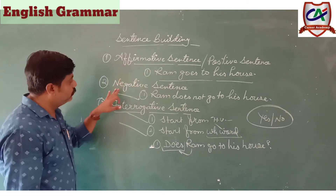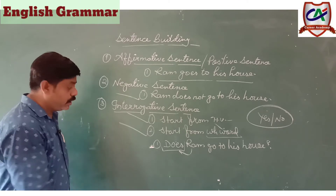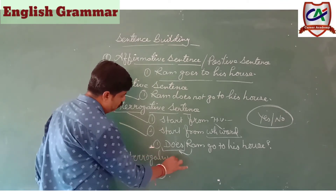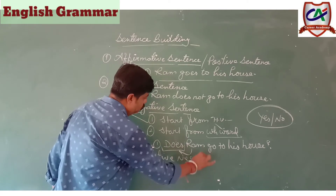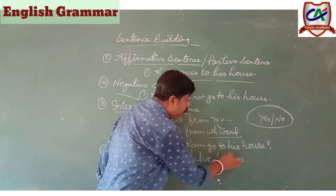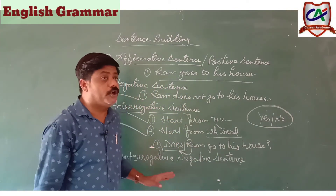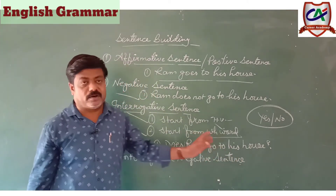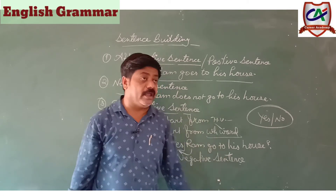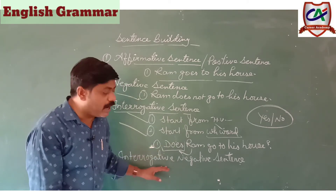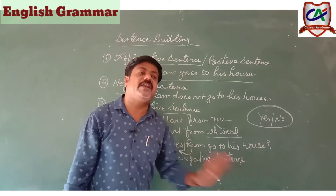So to summarize: first is Affirmative sentence, second is Negative sentence, third is Interrogative sentence, and fourth — and last — is Interrogative Negative sentence. Interrogative Negative sentence — इसमें दो sentence हैं: interrogative भी है और negative भी है। Sentence को interrogative भी बनाना है और साथ में उसको negative meaning भी देना है।